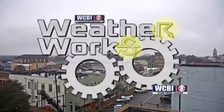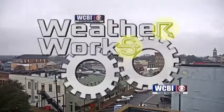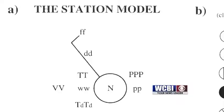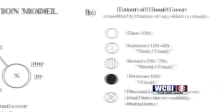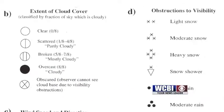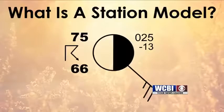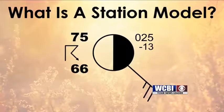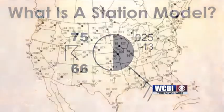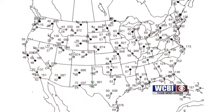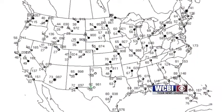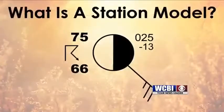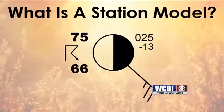You may have noticed the symbols in our logo. They are symbols that you might find on a station model. Today we'll talk a little bit about what a station model is and what the symbols mean. Station models are a compact way of displaying lots of weather information for a specific location. Generally, you will see a map of station models such as this one for the U.S.